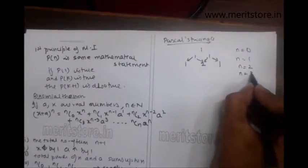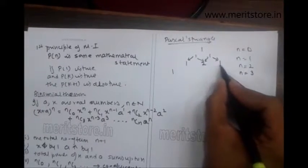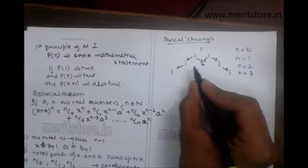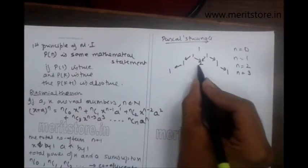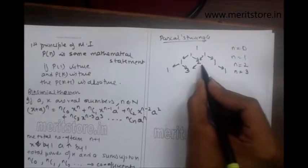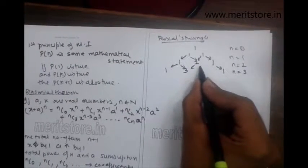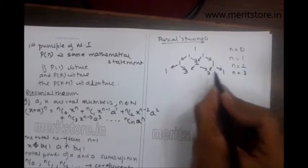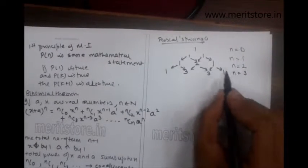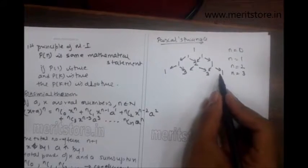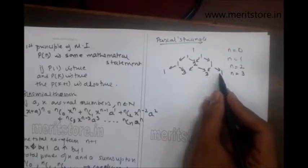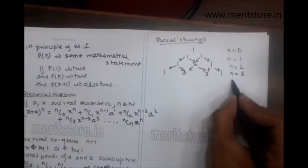When n equals 3, you write the first term as it is towards the left and towards the right. In this case, you take the sum of first two terms right in between. That is 1 plus 2 gives you 3. And 2 plus 1 also gives you 3. When n equals 3, that is x plus a the whole cube. There are 4 coefficients, 4 terms. That is x cube plus 3x square a plus 3xa square plus a cube.